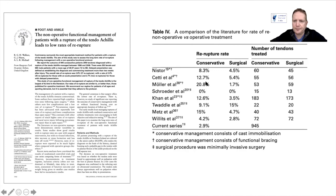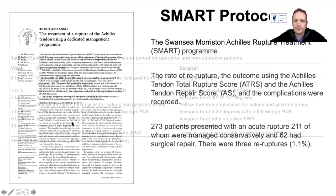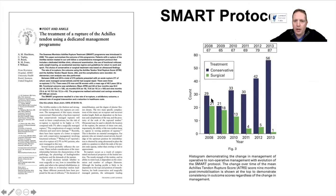Functional rehab then became the norm. The instigator was a large observational study from Belfast — a level four study but with extremely high numbers — where their series achieved a 2.9% re-rupture rate, as good as any surgical series. The Swansea group published the SMART protocol in the BJJ: equinus four-layer casts with wedges to appose the tendon ends, then into a vacuum-assisted equinus boot coming from 30 degrees gradually up to a normal position. Their re-rupture rate on 273 patients was 1.1%, and many other units around the country now report very similar numbers.